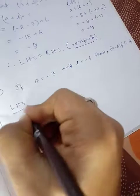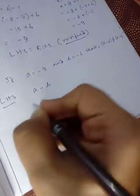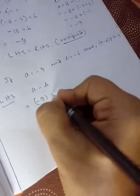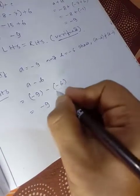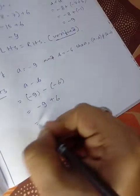Similarly, we can start with LHS: a - b = -9 - (-6) = -9 + 6 = -3.